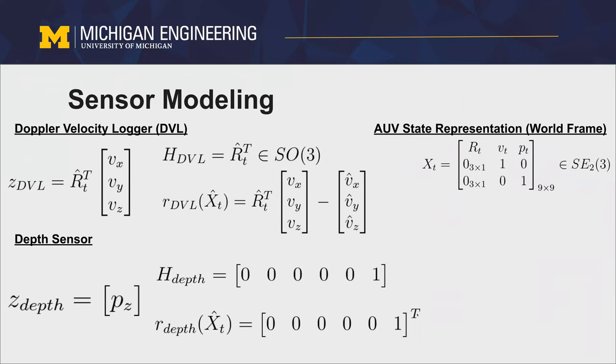In order to use measurements from the sensors, we had to define the measurement model for each sensor and implement them as custom factors in the GTSAM framework. For this, we had to define the residual associated with the measurements made from each sensor and the respective Jacobian matrix. The DVL inherently returns measurements in the robot's body frame, so conversion to the world frame was necessary because the state is being tracked in the world frame. This conversion was done by multiplying the measurement by the estimated rotation, while the depth sensor returns were directly incorporated as the measurements were in the world frame.